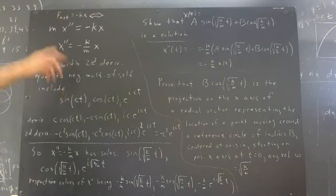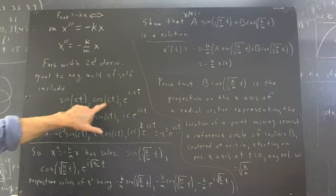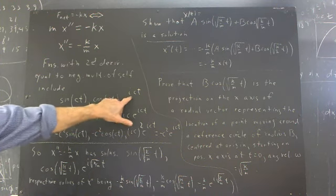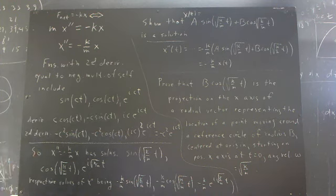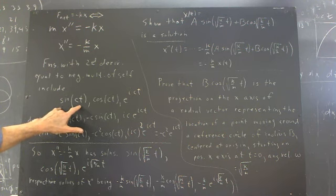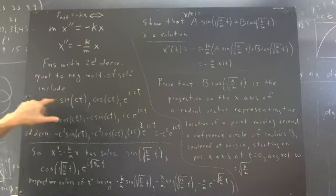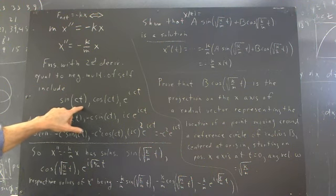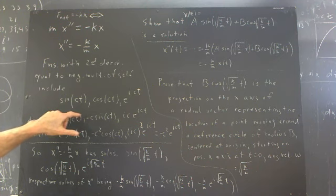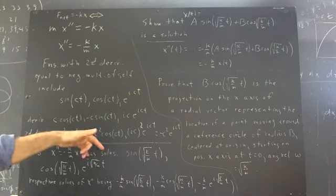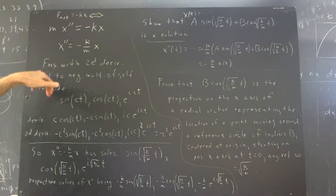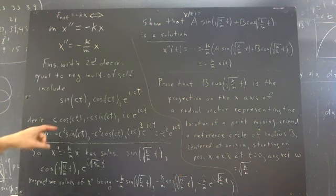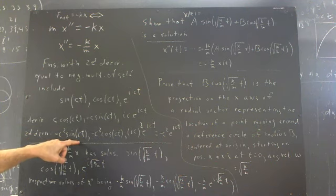So, the functions will be sine of ct, cosine of ct, e to the ict. The second derivative of sine of ct is what? Well, the derivative is going to be cosine of ct times c. By the chain rule, you have that factor of c. And then the derivative of the cosine of ct is negative c sine t multiplied by the c that we got from the first derivative. We get negative c squared sine of ct.